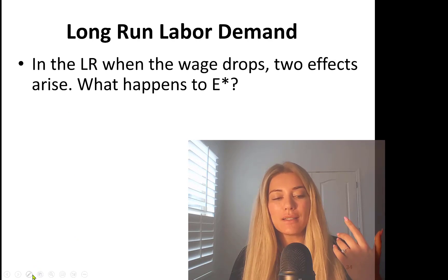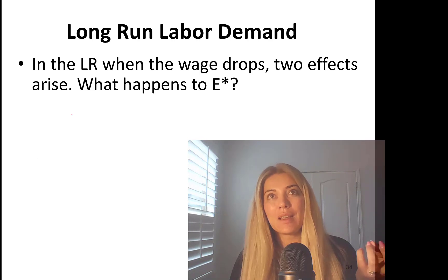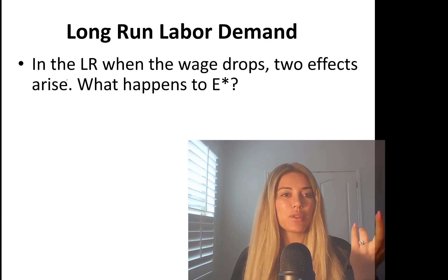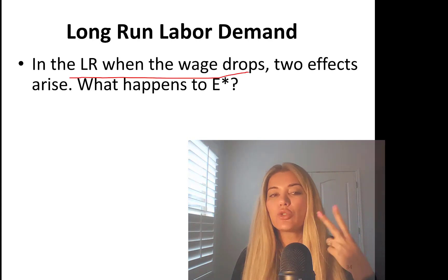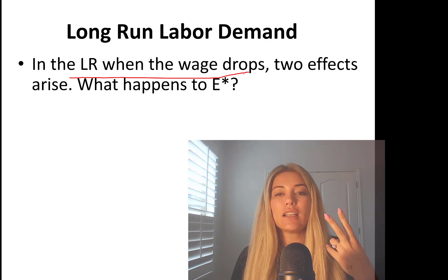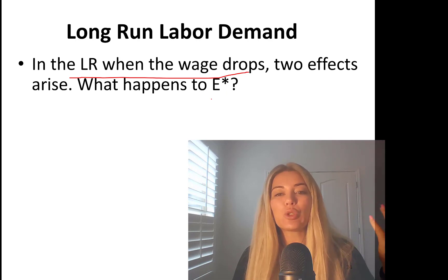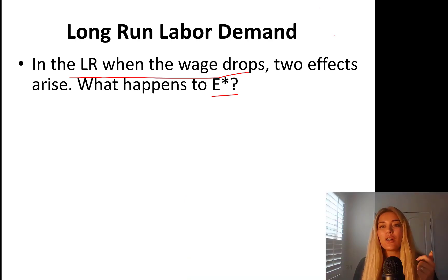Long-run demand is all about long-run labor demand. This is all about determining how many workers to hire at the same time, how many units of capital to purchase. In the long run, when the wage rate drops, two effects arise. These are very similar to income and substitution effects. But the question is what's going to happen to the employment or level of labor or the optimal level of labor these companies should hire. Wage rate is dropping. It's cheaper to hire workers now. Let's see what's going to happen.